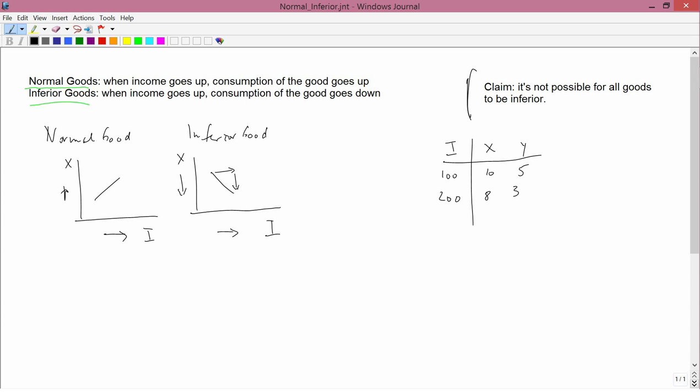Let me explain why this behavior doesn't make any sense. So here's the original budget constraint corresponding to an income of 100.